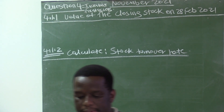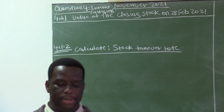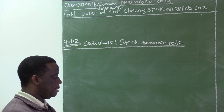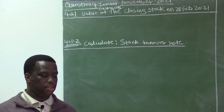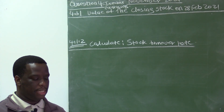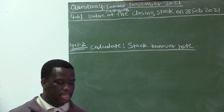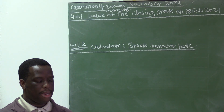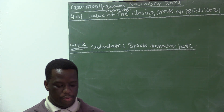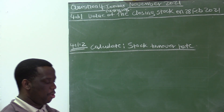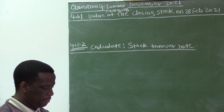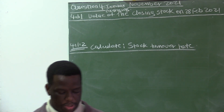4.1 inventories. Justine Footwear PTY LTD sells one brand of running shoes. The business uses the weighted average method to value these shoes and the periodic inventory system is used. Calculate the following on 28 February 2021, the financial year end — seven marks. 4.1.1, we want to calculate the value of the closing stock using the weighted average method.